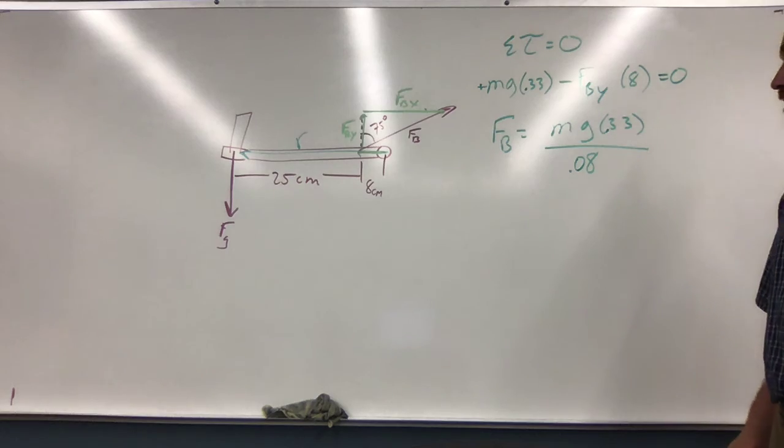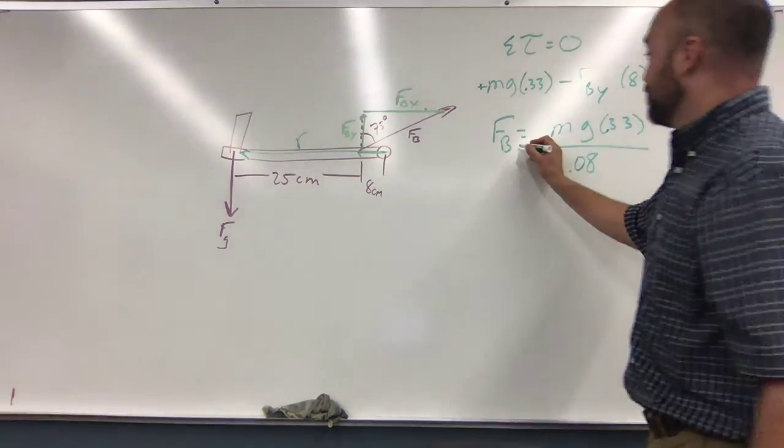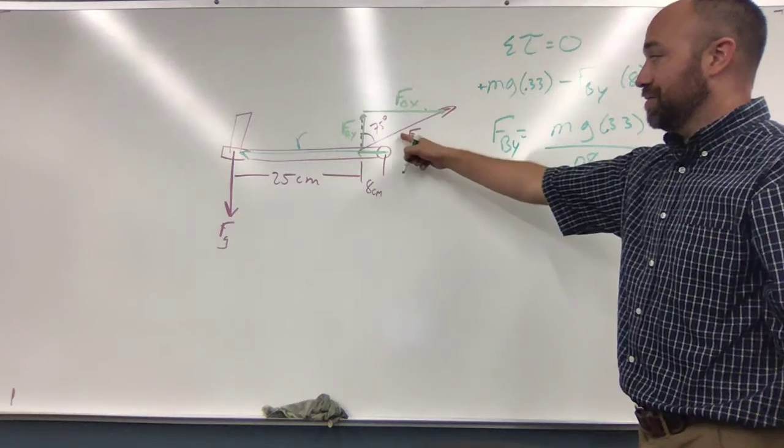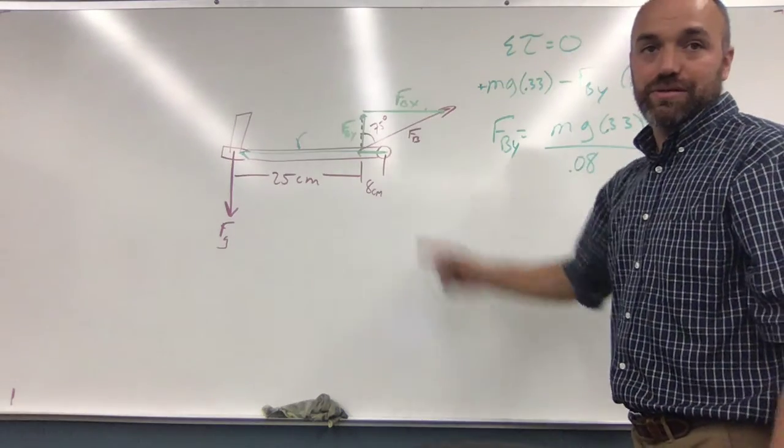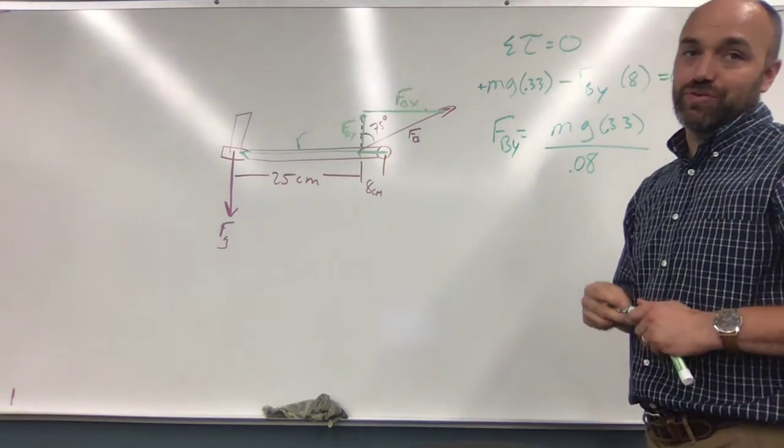So there we go and that'll give you the force of the bicep, but just the y component. How do we get the... and then from there you have to use trig to get the hypotenuse which is what it's actually asking for.